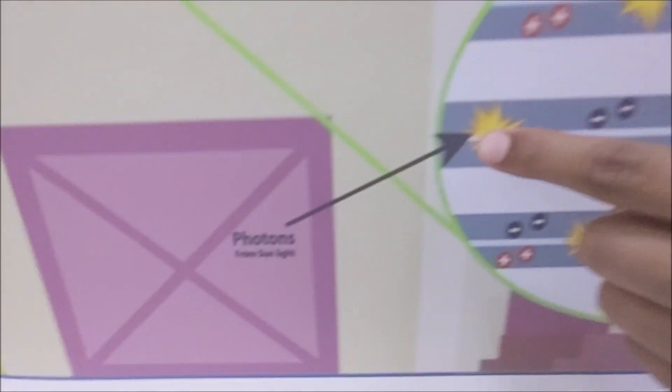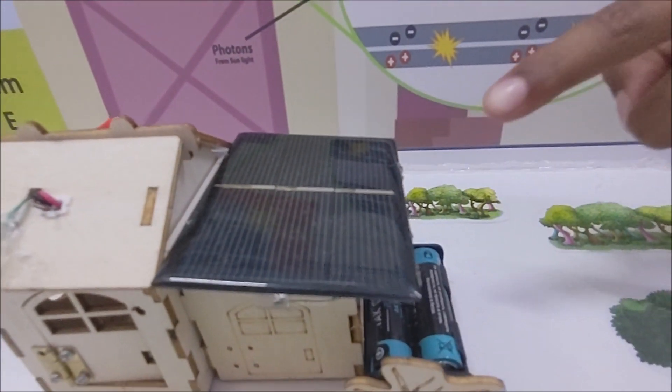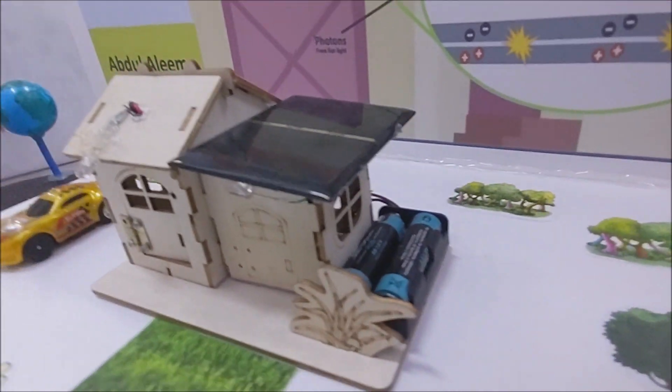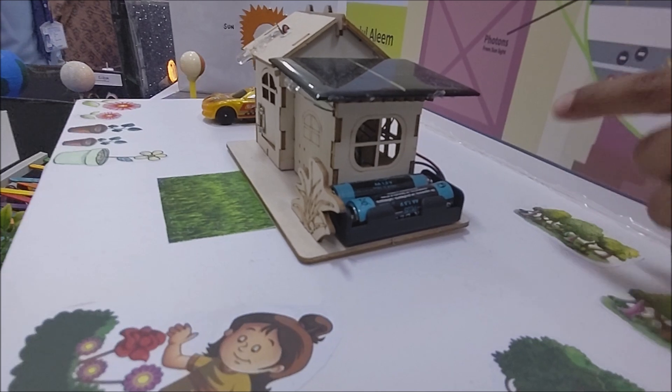The sun's rays contain photons. When the photons hit a solar module, electrons inside of the solar module move and an electrical current is generated. The electricity travels from the solar array to an inverter.